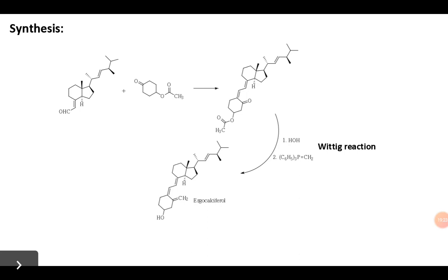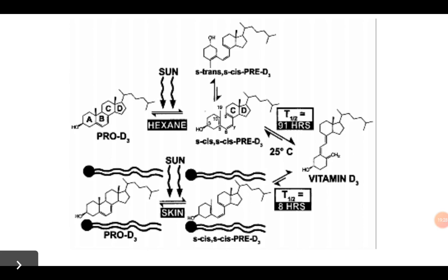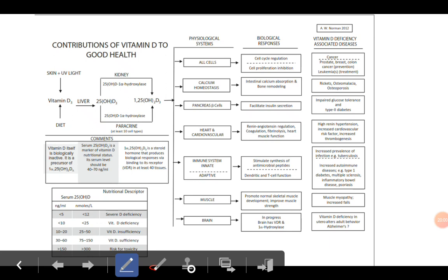We all know that sun rays help us in gaining vitamin D. Upon exposure to sun, provitamin D2 converts itself to vitamin D, and this is further integrated into cell chemistry.